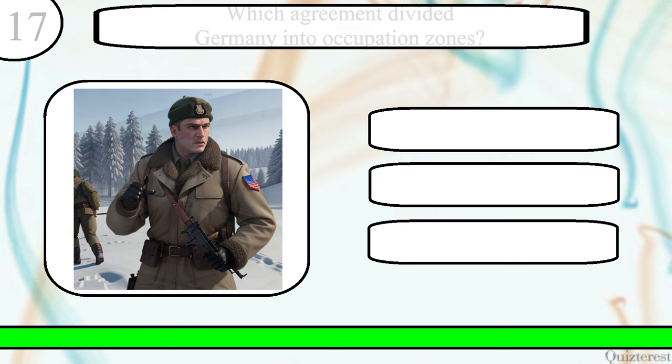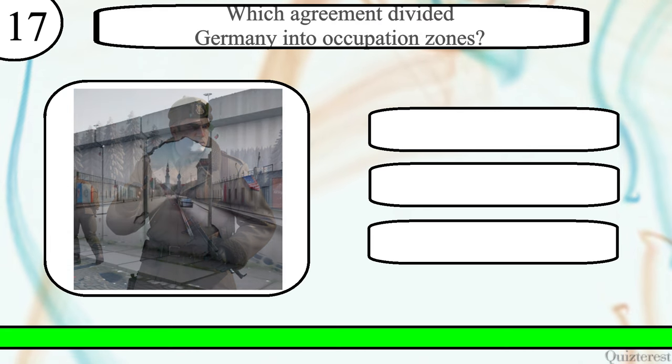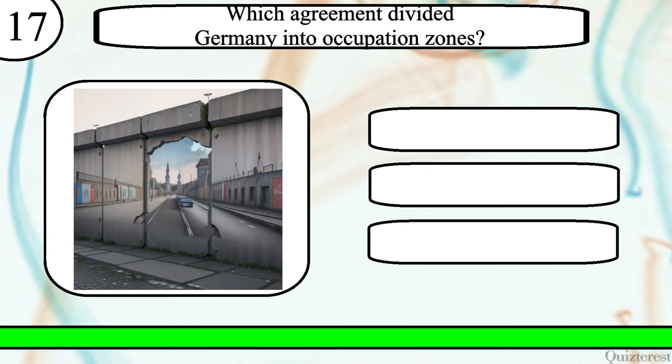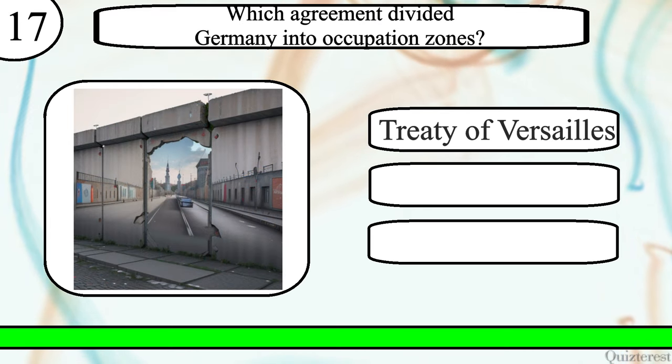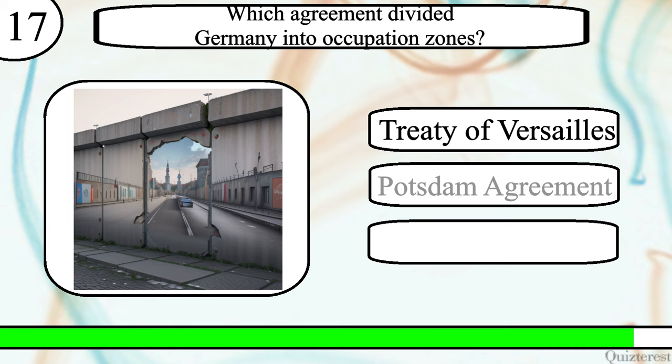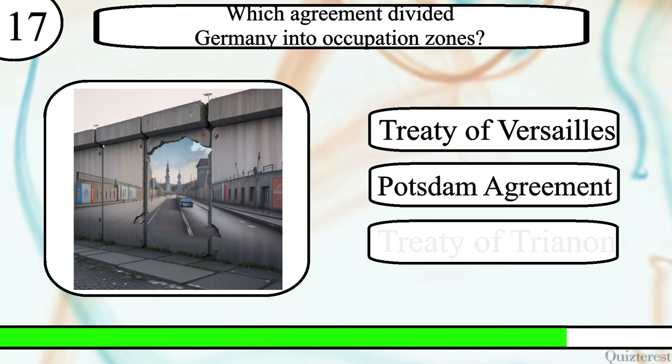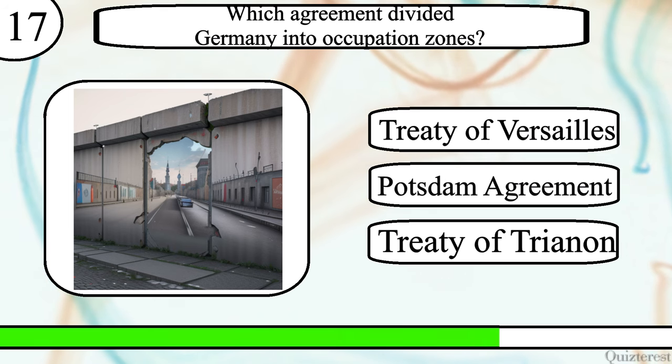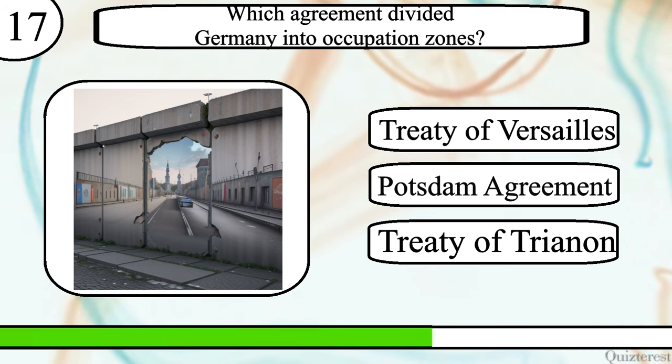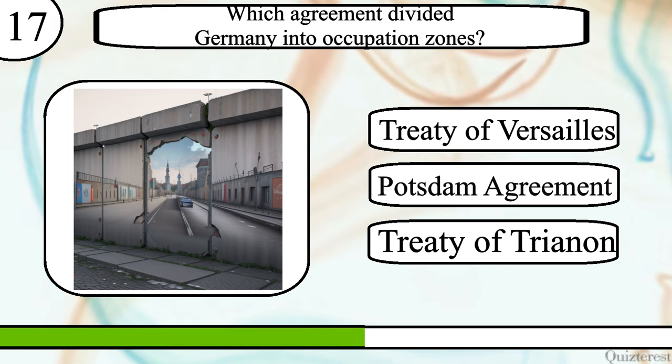Question 17. Which agreement divided Germany into occupation zones? Treaty of Versailles, Potsdam Agreement, or Treaty of Trianon?